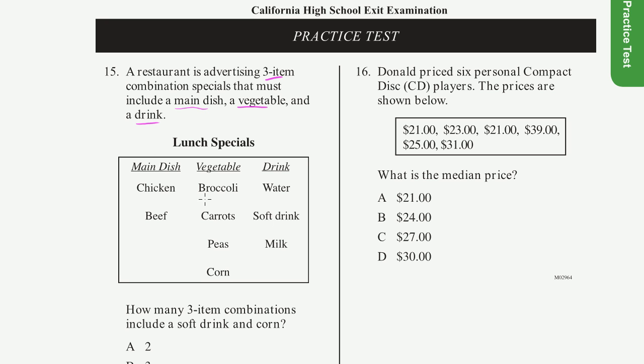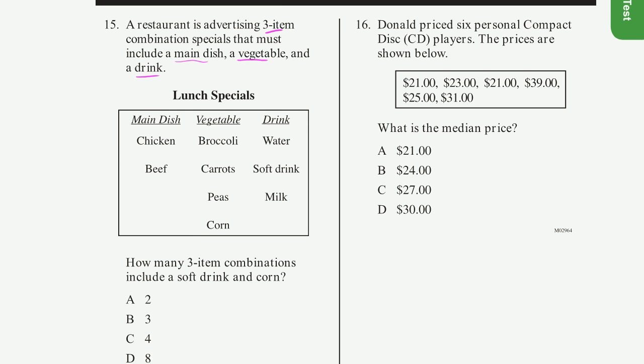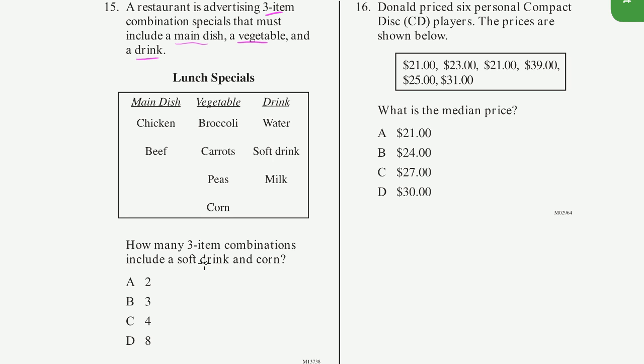OK, so you have to have at least one of these. So what are they going to ask us? How many three item combinations include a soft drink and a corn?